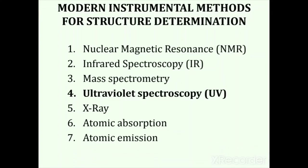The sixth and seventh methods include atomic absorption and atomic emission spectroscopy, which are used for the determination of various elements. Combined, all these methods are used for the determination of the exact structure of the compound under investigation.